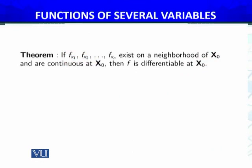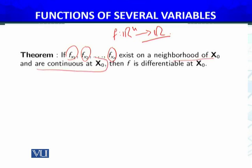The conditions are that partial derivatives fx1, fx2, ... fxn — for a function whose domain is Rⁿ into the real numbers — exist on a neighborhood of x0 and are continuous. If the partial derivatives are continuous, then f is differentiable. So we conclude that f is a differentiable function of several variables.